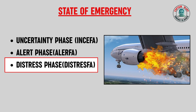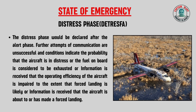The third and last phase is the distress phase, with code word DETRESFA. The distress phase is declared after the alert phase when further attempts at communication with the aircraft are unsuccessful and conditions indicate the probability that the aircraft is in distress, or the fuel on board is considered to be exhausted, or information is received that the operating efficiency of the aircraft is impaired to such an extent that a forced landing is likely, or information is received that the aircraft is about to or has already made a forced landing.